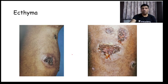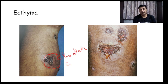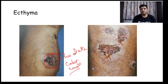If the impetigo goes deeper — if Impetigo contagiosa goes deeper — it leads to formation of Ecthyma. In Ecthyma you will see chocolate-colored crust, usually seen on the lower limbs. There will be a punched-out ulcer with chocolate crust in Ecthyma, secondary to Impetigo contagiosa.